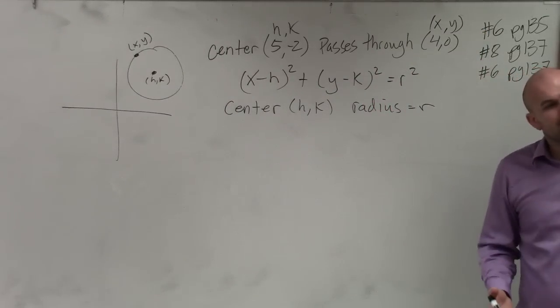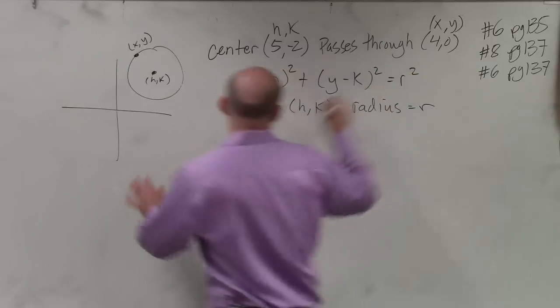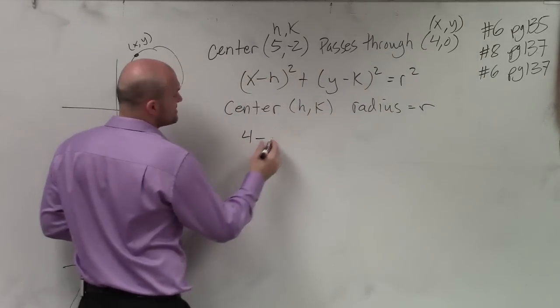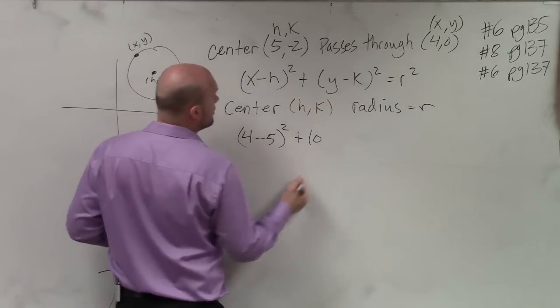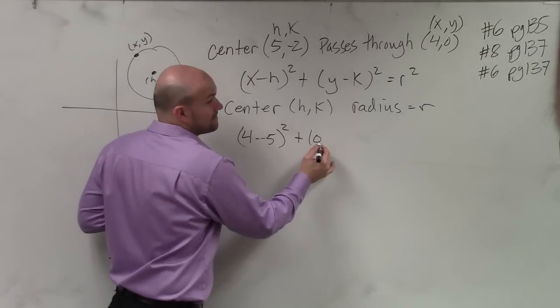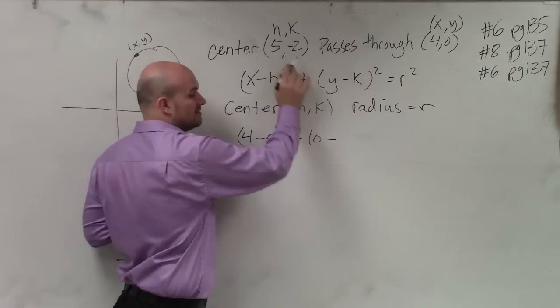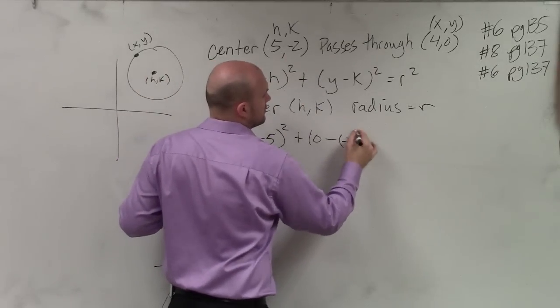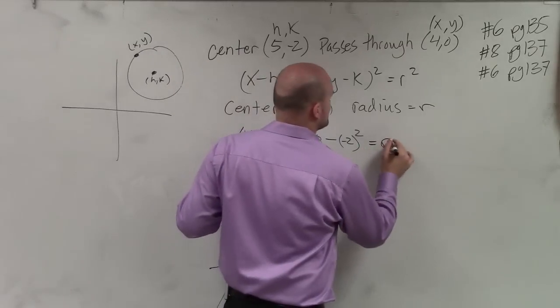So now all I need to do, ladies and gentlemen, is plug those points in and solve for r. So x is 4, (4 - 5)² plus y, which is 0. Now here's where you've got to be careful. It's y minus k, right? Y minus, what is k? Negative 2. So it's going to be a positive, all right? Equals r².